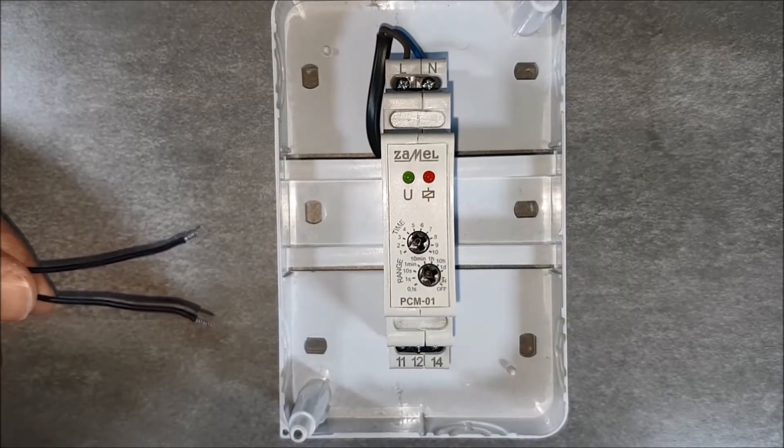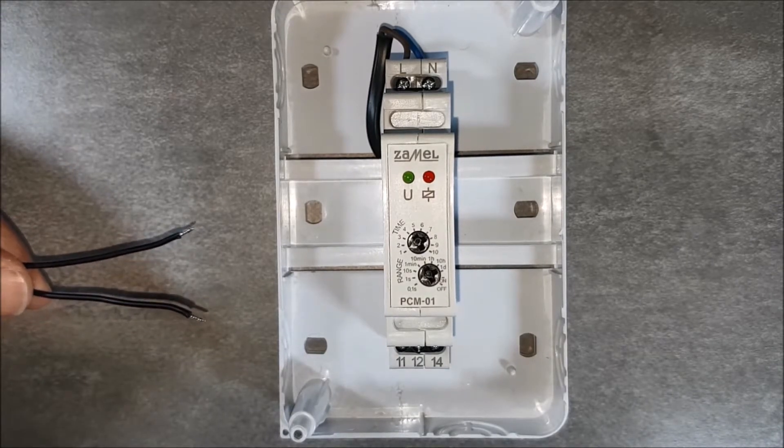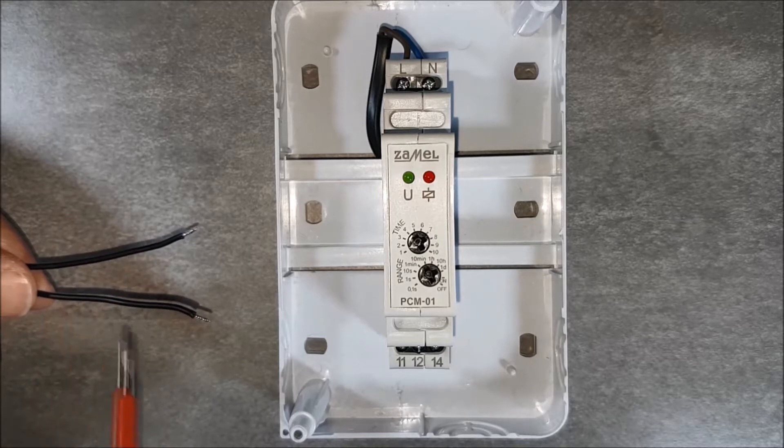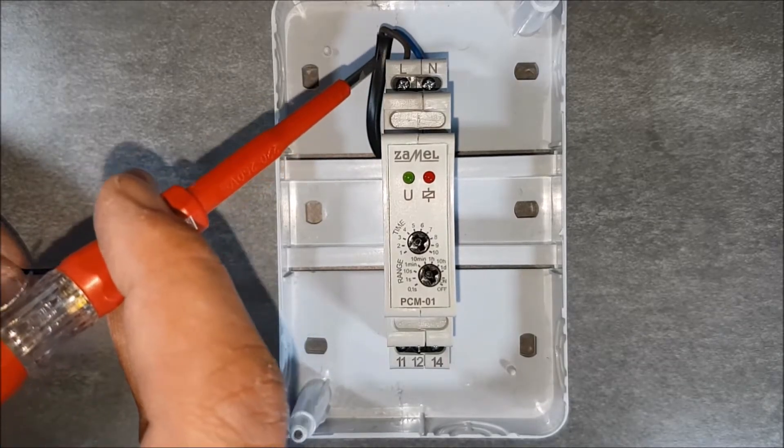Transfer the supply voltage to the output relay. Do this by connecting the L terminal with terminal 11 by the wire carrying the phase potential.